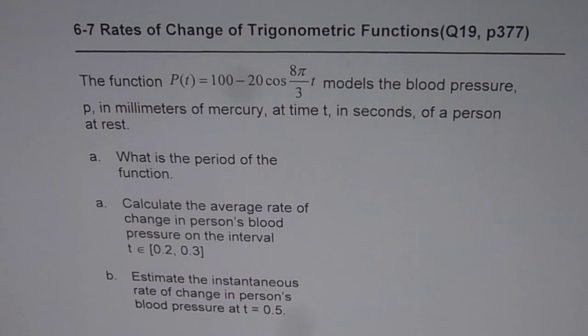Rates of Change Trigonometric Functions. The function P(t) equals 100 minus 20 cos 8π/3 t models the blood pressure P in millimeters of mercury at time t in seconds of a person at rest.